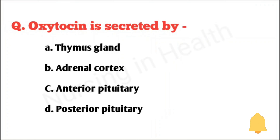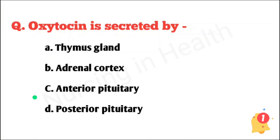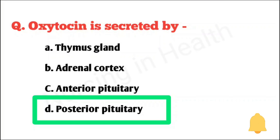Oxytocin is secreted by: thymus gland, adrenal cortex, anterior pituitary, or posterior pituitary. Right answer option D: posterior pituitary.